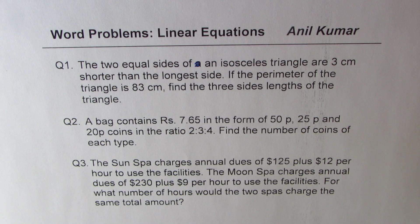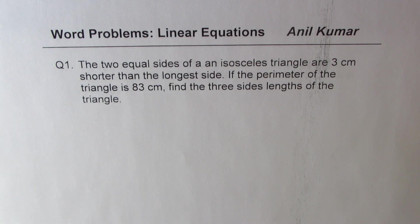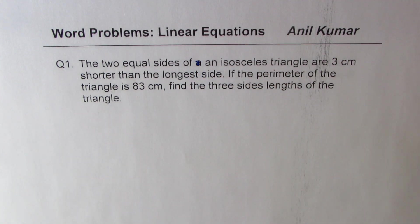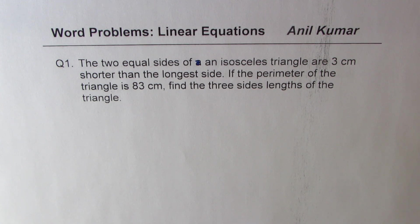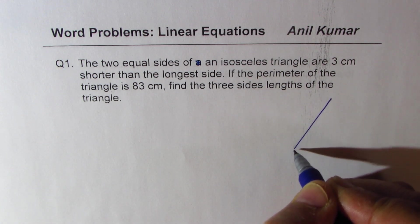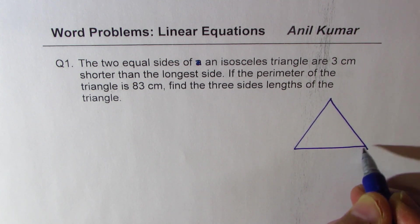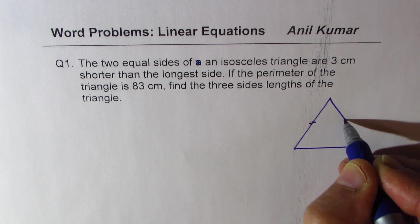Now let's look into these solutions one by one. The very first question is based on sides of triangles. So let us sketch a triangle first. Let us assume that this is our isosceles triangle where these two sides are equal.